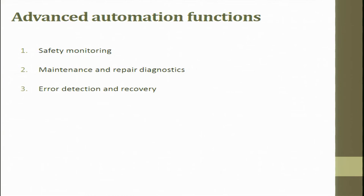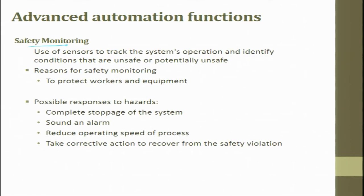Advanced automation functions include safety monitoring, maintenance and repair diagnostics, and error detection and recovery. Safety monitoring uses sensors to track system operation and identify unsafe conditions — for example, stopping the machine when a door is opened. Possible responses to hazards include complete stoppage, sounding an alarm, reducing operating speed, or taking corrective actions to recover from safety violations.